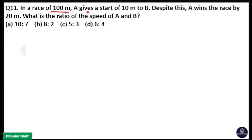In a race of 100 meters, A gives a start of 10 meters to B. Despite this, A wins the race by 20 meters. What is the ratio of the speed of A and B?